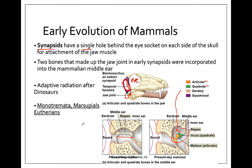There are three main groups of mammals. There are the monotremes, which are egg-laying mammals. There are the marsupials, which have pouches. And then the eutherians — EU meaning true — meaning that we have true placental mammals, which is you and me.